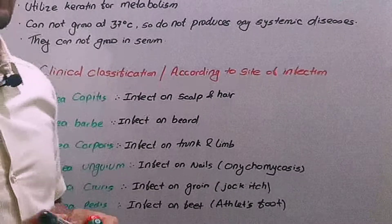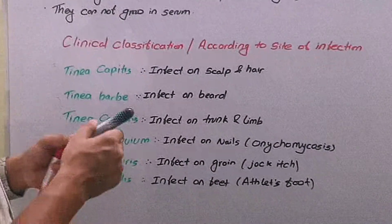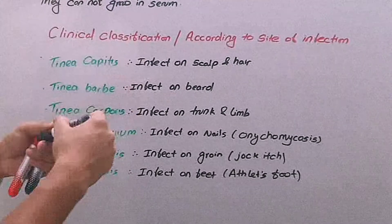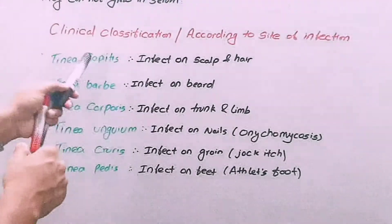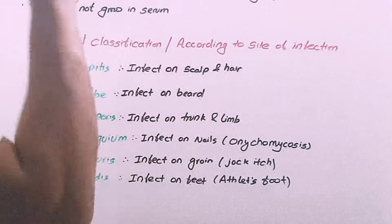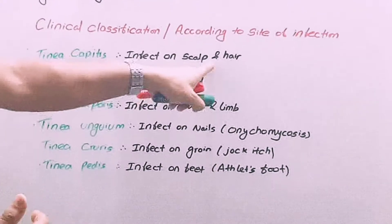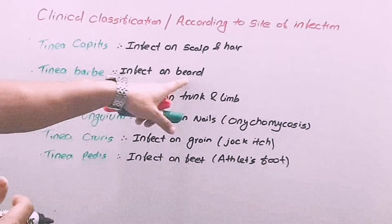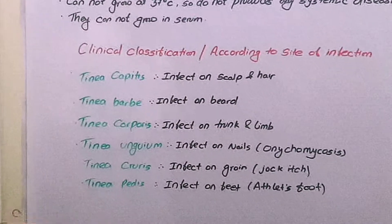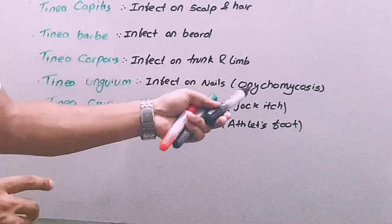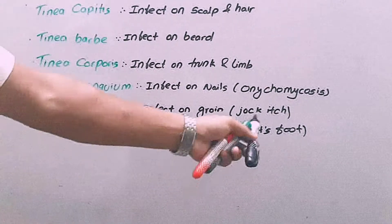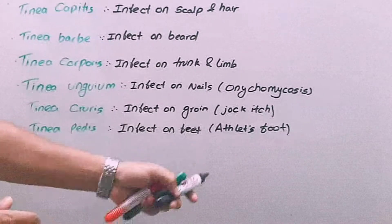Classification, or clinical classification, is according to site of infection. According to clinical classification, we divide the dermatophytes into six groups from top to bottom: tinea capitis which infects the scalp and ear; tinea barbae which infects the beard; tinea corporis which infects the trunk and limb; tinea unguium which infects the nails, also called onychomycosis; tinea cruris which infects the groin, also called jock itch; and tinea pedis which infects the feet, also called athlete's foot.